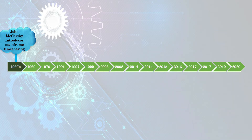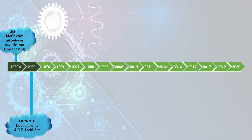In 1969, J.C.R. Licklider helped develop the ARPANET — the Advanced Research Projects Agency Network — a very primitive version of the Internet.